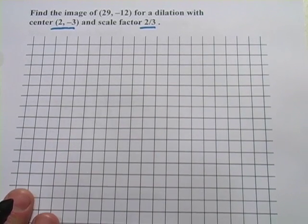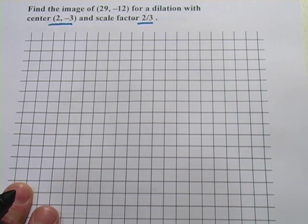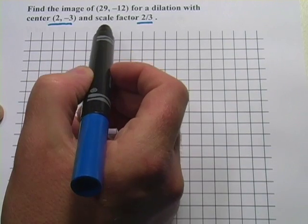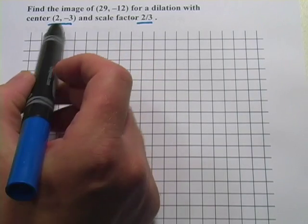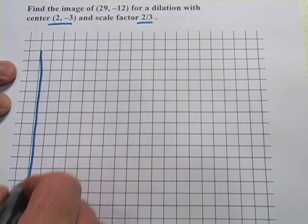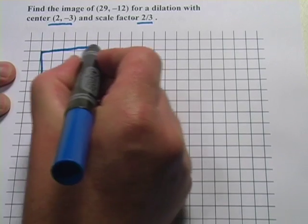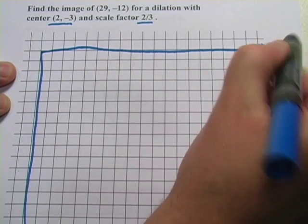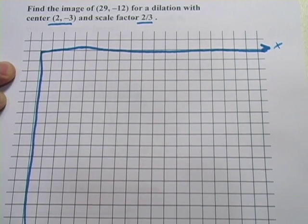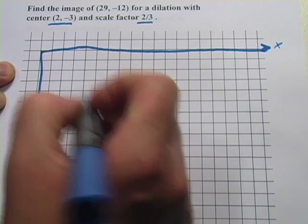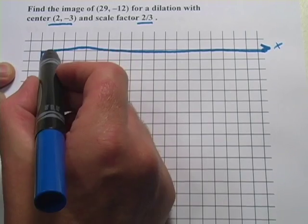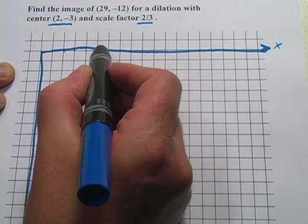So I've got some graph paper here. Let me draw in some axes. And what I notice is that my point is in the fourth quadrant. I've got a positive x value and a negative y value. My center is also in the fourth quadrant. So I'm just going to leave off a lot of other stuff. There's my x axis, here's my y axis. And let's see, oh boy, that's pretty far out there, 29. So I better go by 2's here: 2, 4, 6, 8, 10, 12, 14, 16, 18, 20, 22, 24, 26, 28.